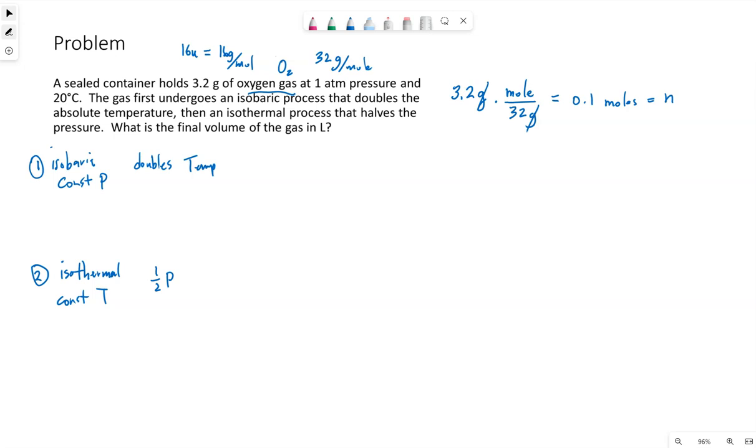So our initial pressure is 1 atm. Our initial temperature is 20 degrees Celsius, which I'm going to go ahead and add my 273. So 293 Kelvin.